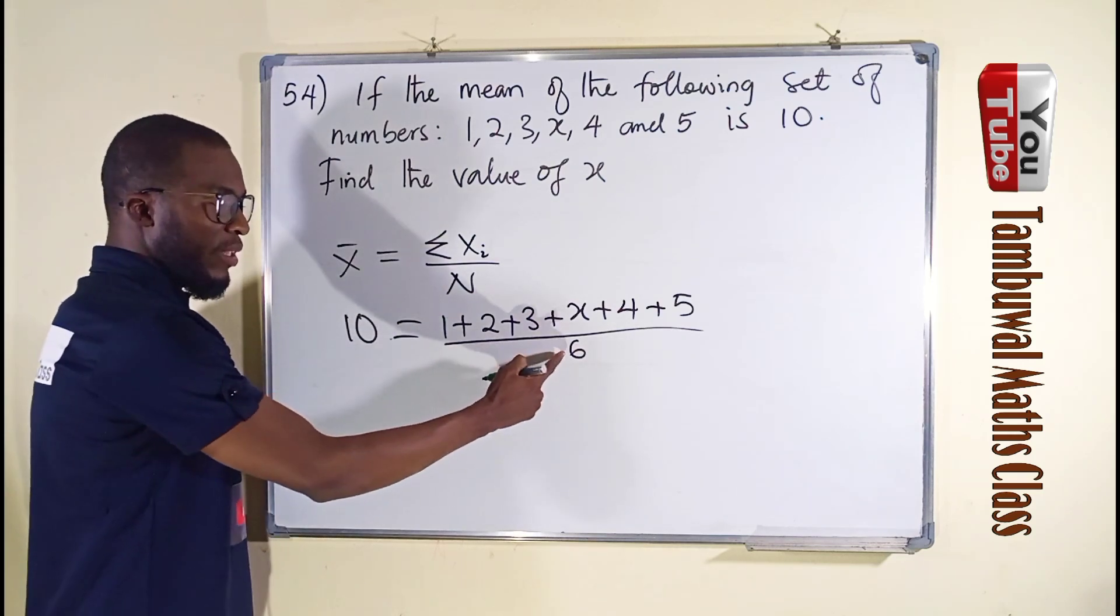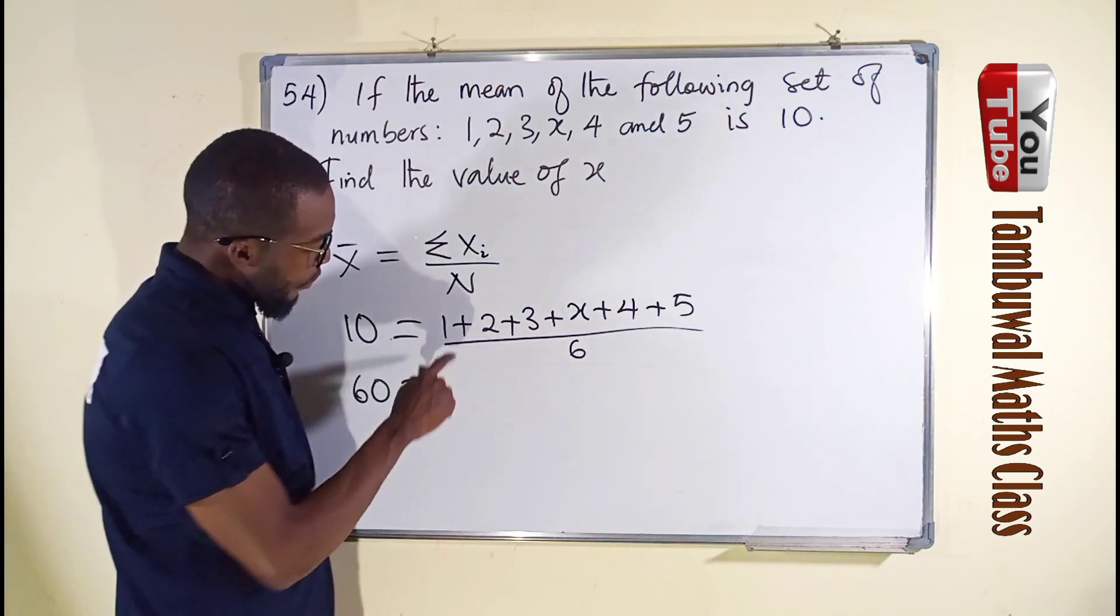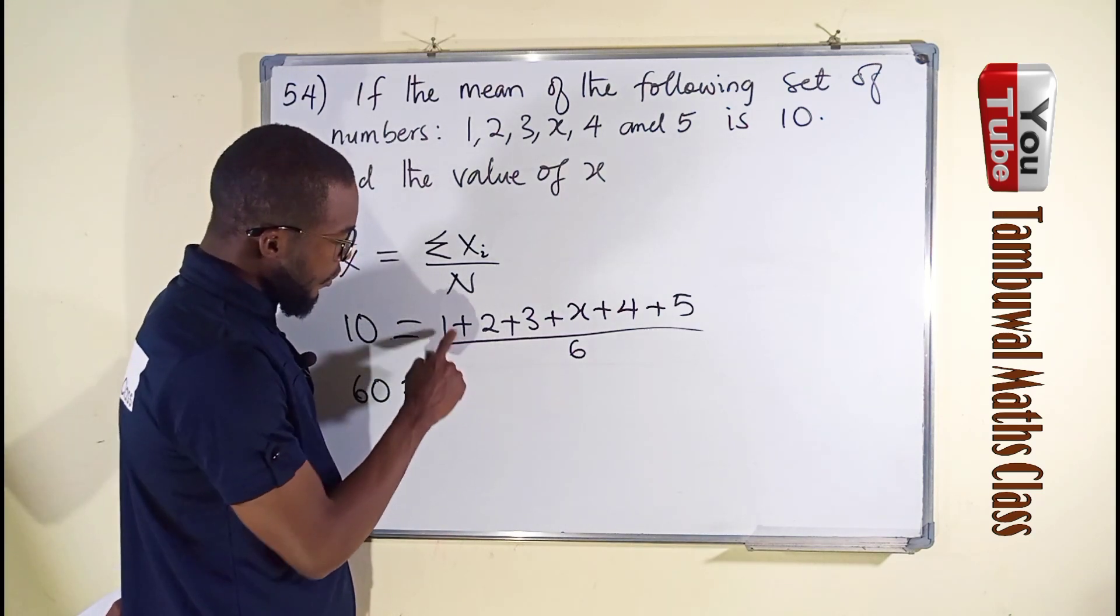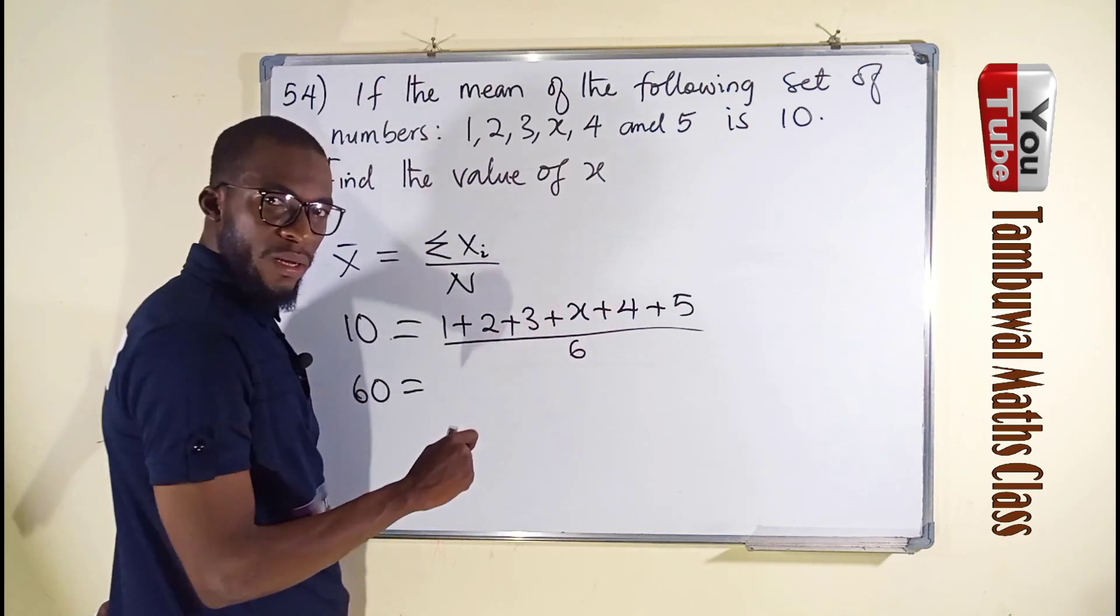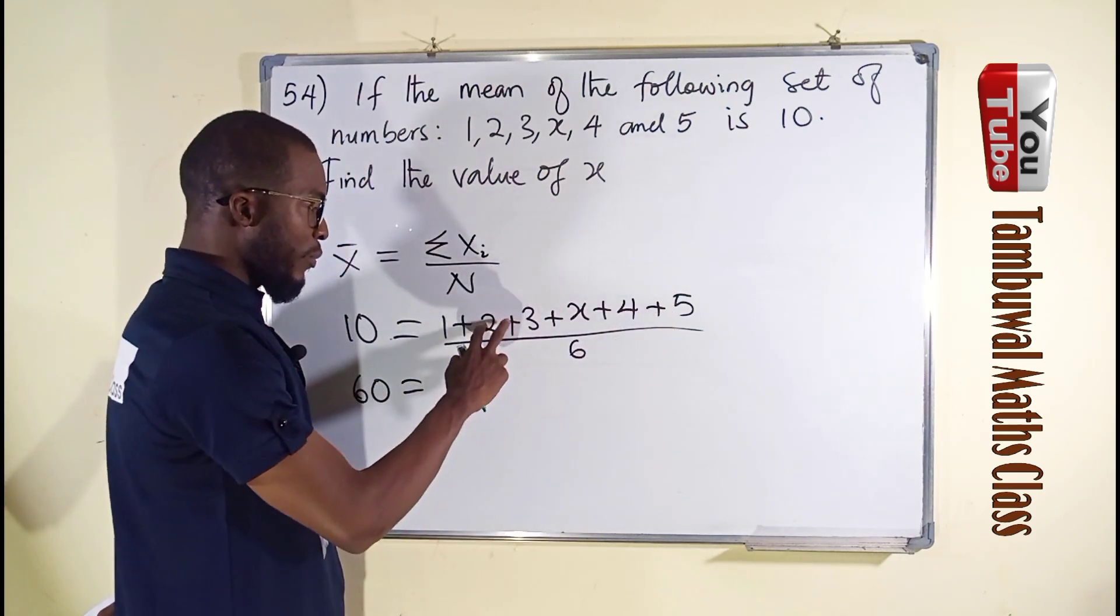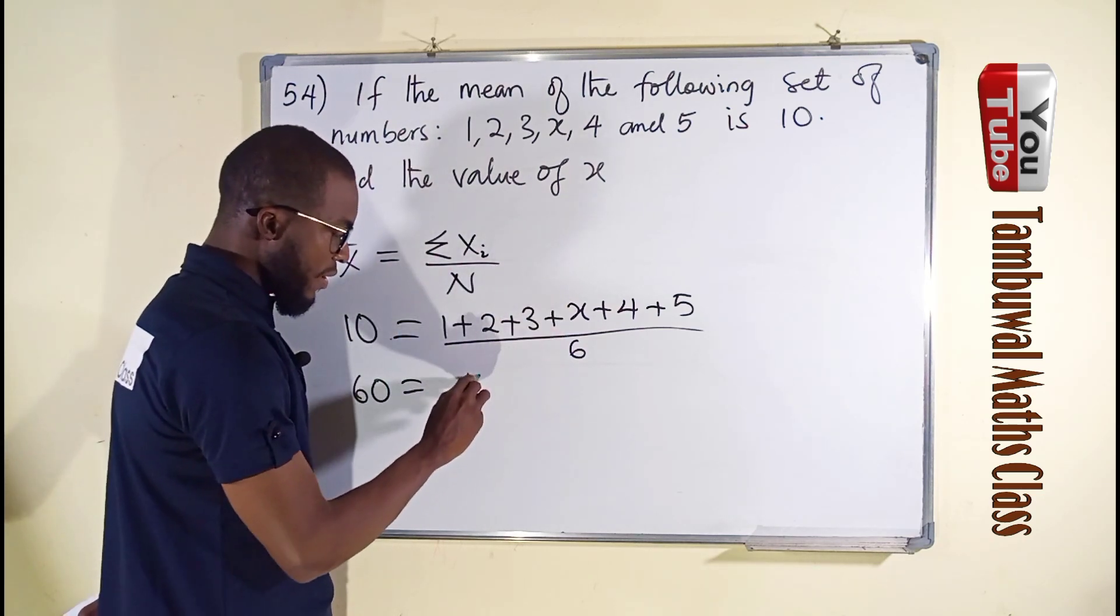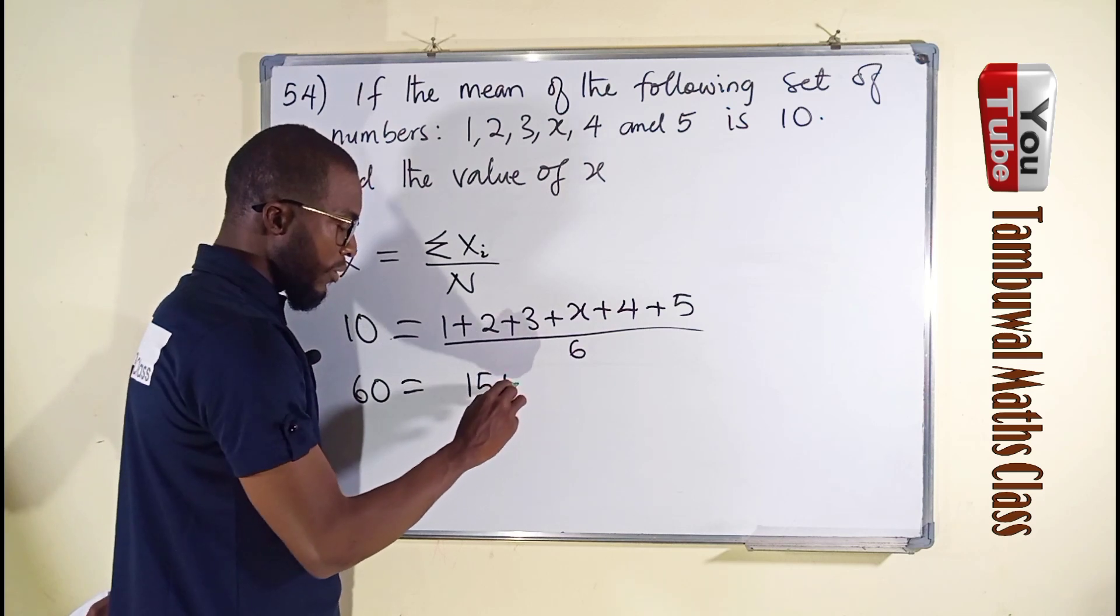By cross-multiplication, 6 times 10 is 60. This is equal to 1 plus 4 is 5, plus 5 is 10, plus 2 is 12, plus 3 is 15, plus x. So we have 15 plus x.